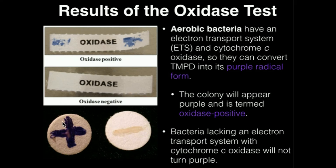Another set of results for the oxidase test. Of note, we actually typically do this on filter paper — this is a little bit different than most of the other tests. You can see the positive result here; we clearly see purple develop, which is the TMPD radical turning purple. And here's the negative result — we don't see any color change.